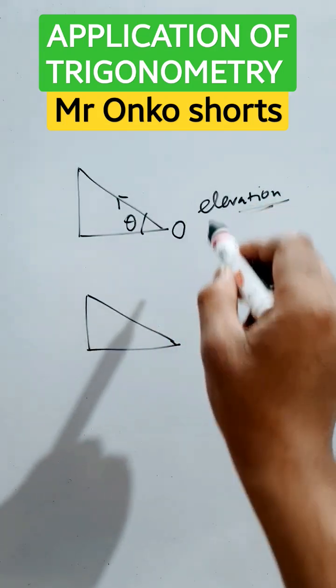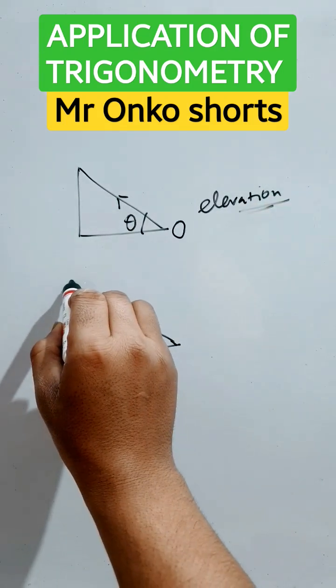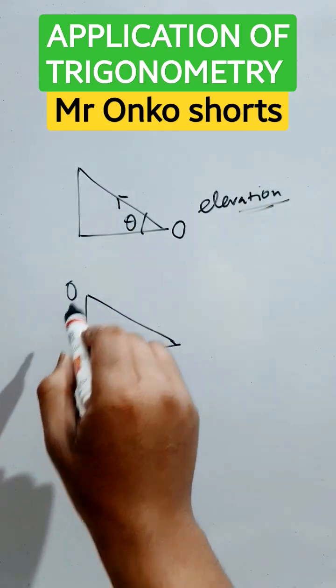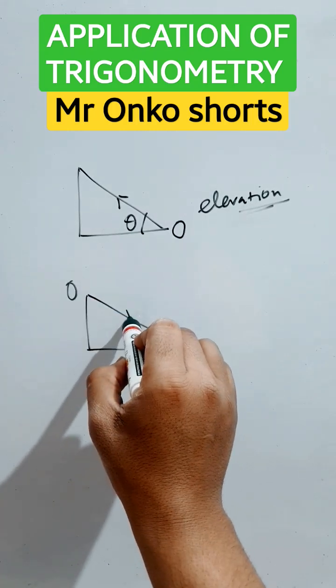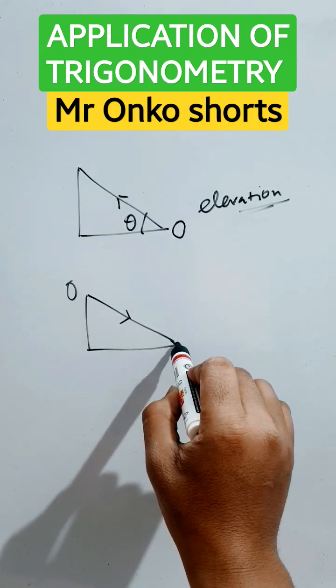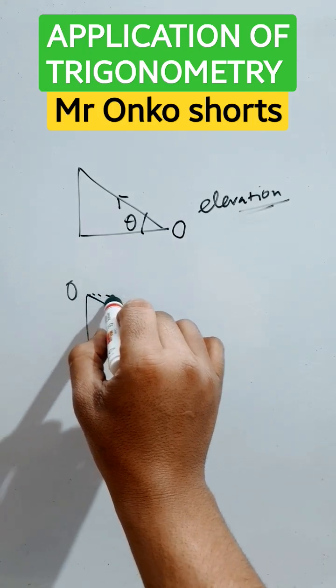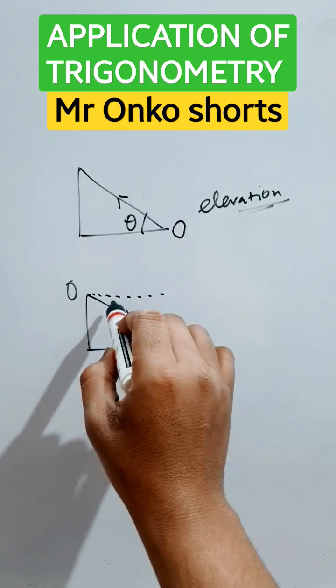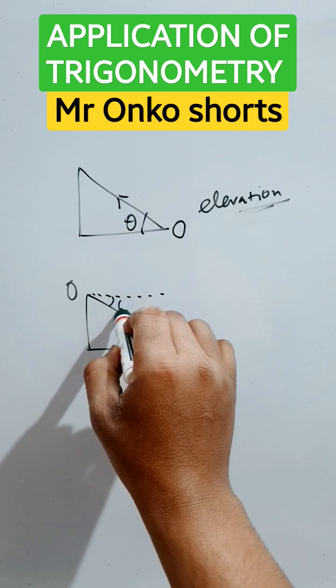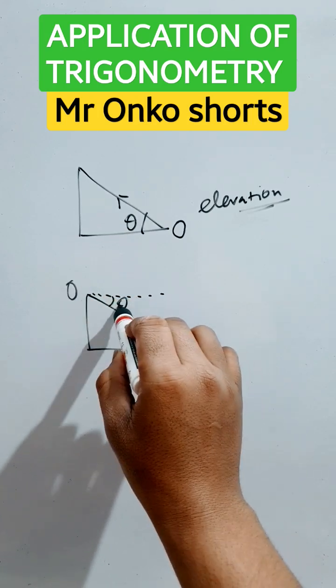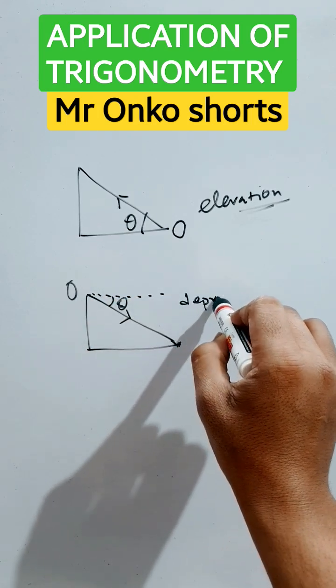This is angle of elevation. Now, here the observer is at the top of this height and he or she has to observe the bottom, the point at the ground. The line drawn parallel to the ground will make angle theta with the line of observation, and that is called angle of depression.